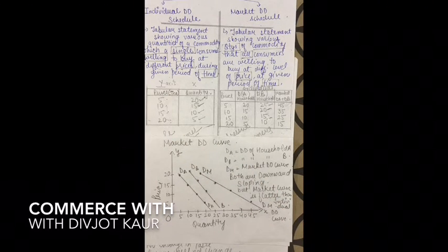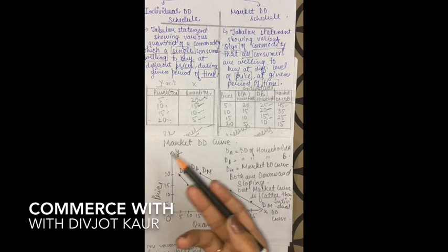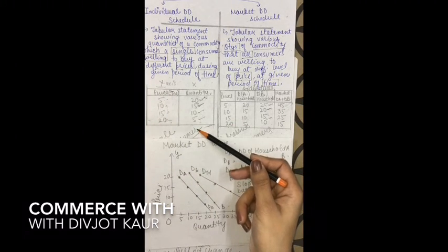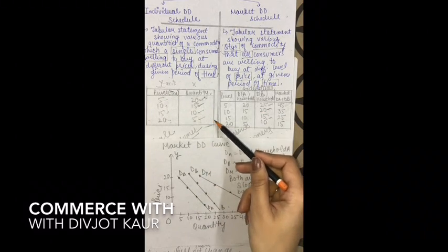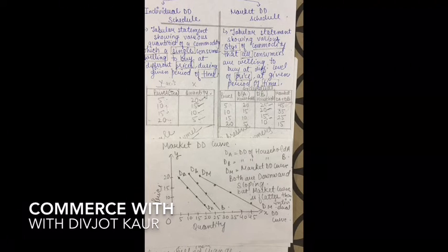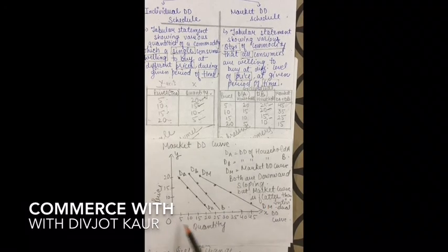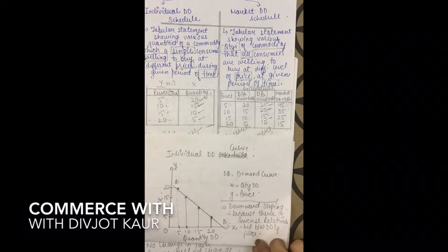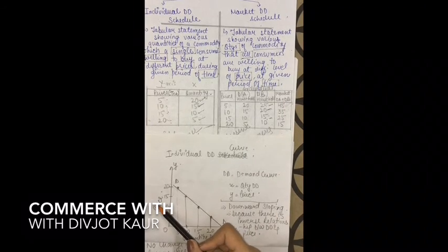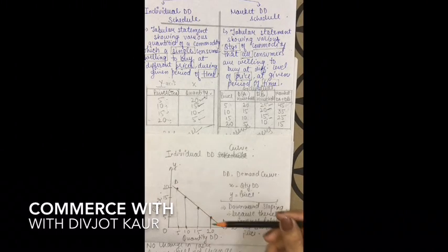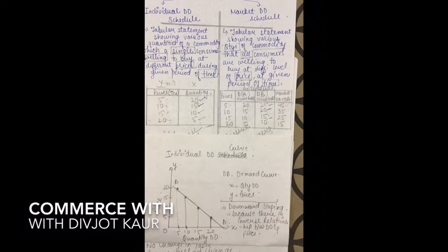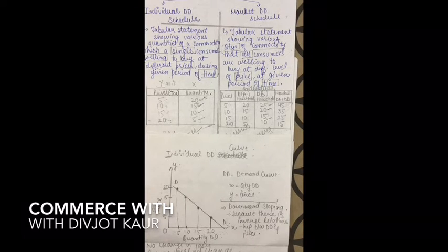If asked to show the relationship between price and quantity demanded with the help of a schedule, you will make the table — assume the prices yourself and assume the quantities yourself. Keep in mind: if price is increasing, quantity must be decreasing. If asked to show with a curve, you will draw the demand curve. Do not forget to label price on Y-axis, quantity on X-axis, write DD, and include the origin. If you do not fully label the demand curve, you will not get full marks.